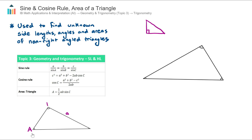Likewise, this top angle we'll call capital letter B — you can give it any letter you want, you could call it D or N — but the important point is the opposite side length needs to be the lowercase version of that letter, so this would be lowercase b. For triangles we tend to just use the three letters A, B, C. So this last angle will be capital C, the opposite side length will be lowercase c, and we usually put a little squiggle under the c to show that it's lowercase.